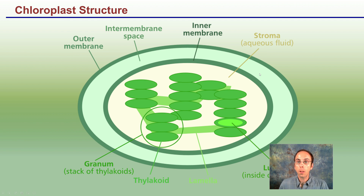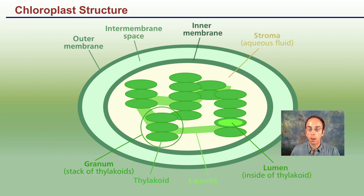Looking at the structure: the stroma is the aqueous fluid. We also see the thylakoid and the grana — the thylakoid being the individual component, and the grana being a stack of those thylakoids. There are multiple membranes, and we also have the lumen, which is the semi-fluid area located within the thylakoid.